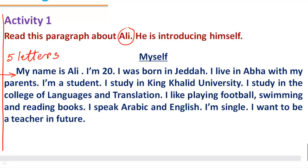The paragraph reads: 'My name is Ali. I am 20. I was born in Jiddah. I live in Abha with my parents. I am a student. I study in King Khalid University, in the College of Languages and Translation. I like playing football, swimming and reading books. I speak Arabic and English. I am single. I want to be a teacher in future.' The first sentence is the topic sentence, followed by supporting sentences, and ending with a final sentence.